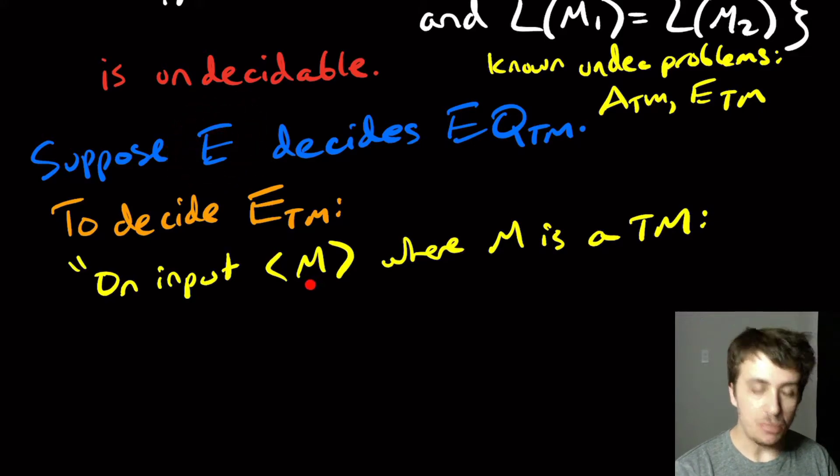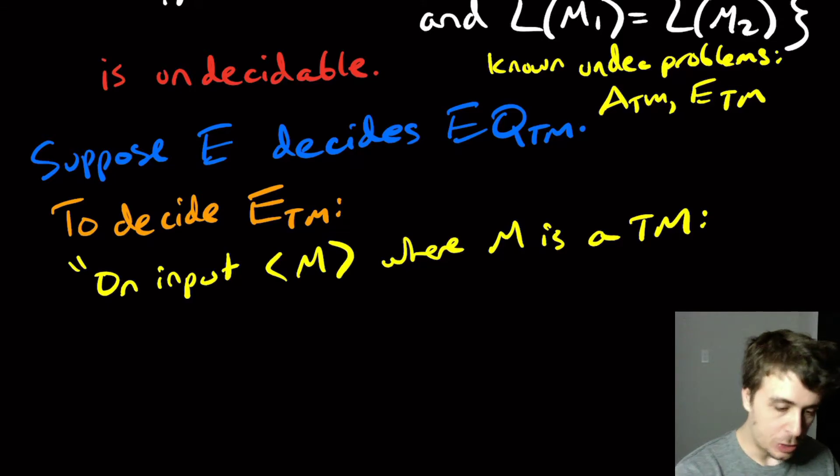Well, I can't just feed M twice because the language of the machine is equivalent to the language of itself. So if I feed M, M to it, that's not going to help us. So what we're going to do, and this is pretty standard,